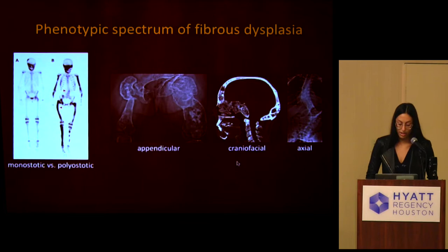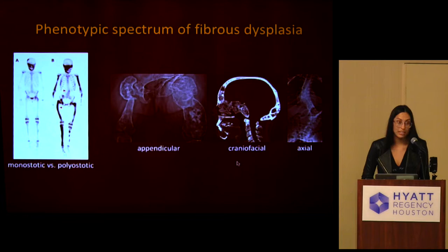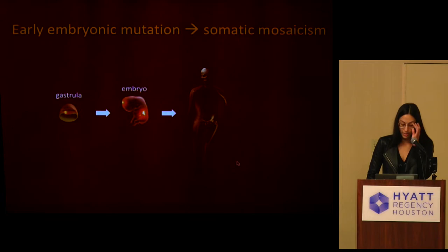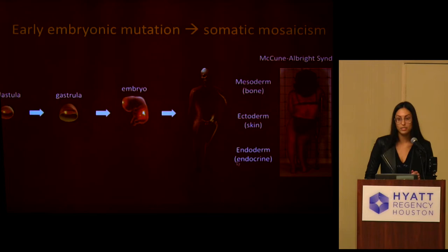Fibrous dysplasia presents along a very broad phenotypic spectrum. You can have monostatic lesions that only affect one bone and that are really trivial and diagnosed incidentally on imaging, to widespread debilitating polyostatic disease that can affect any combination of the appendicular, craniofacial, or axial skeleton. This phenotypic variation is really due to the point during embryogenesis when the mutation occurs. Early embryonic mutations result in somatic mosaicism and the FD lesions then reflect the migration of the mutant cells.